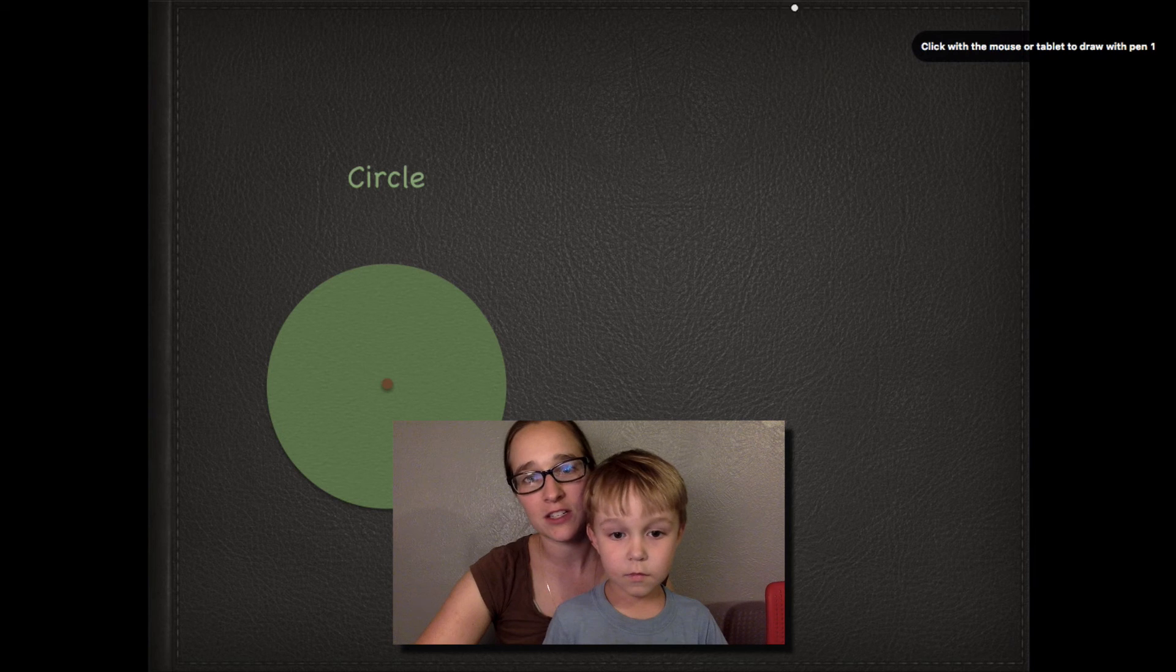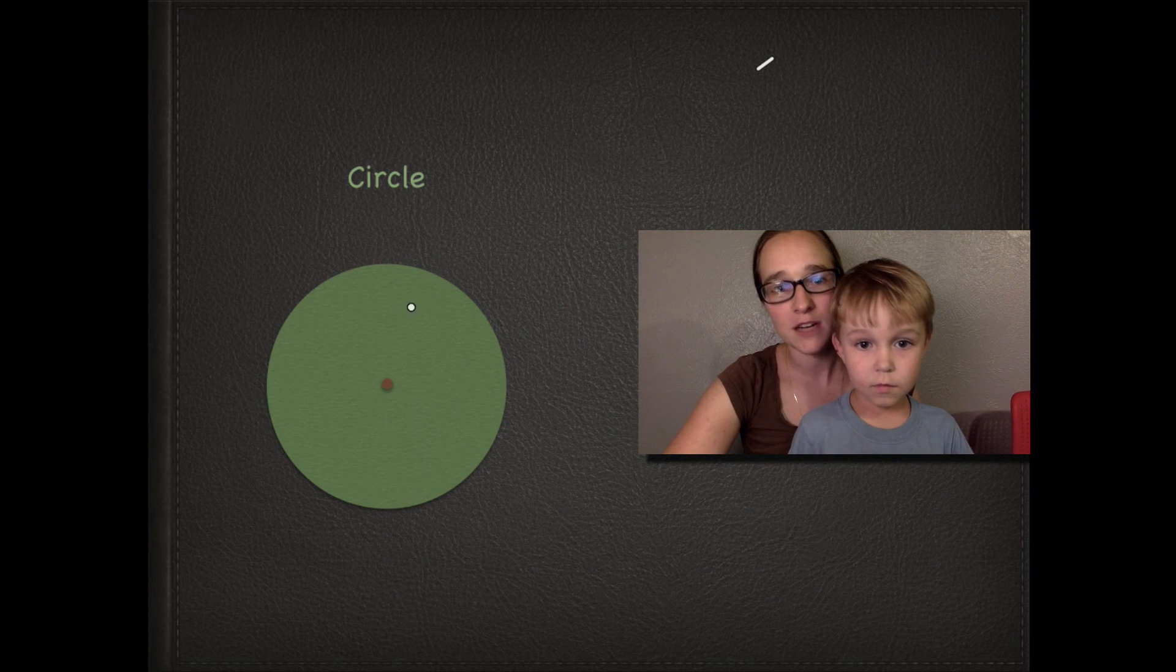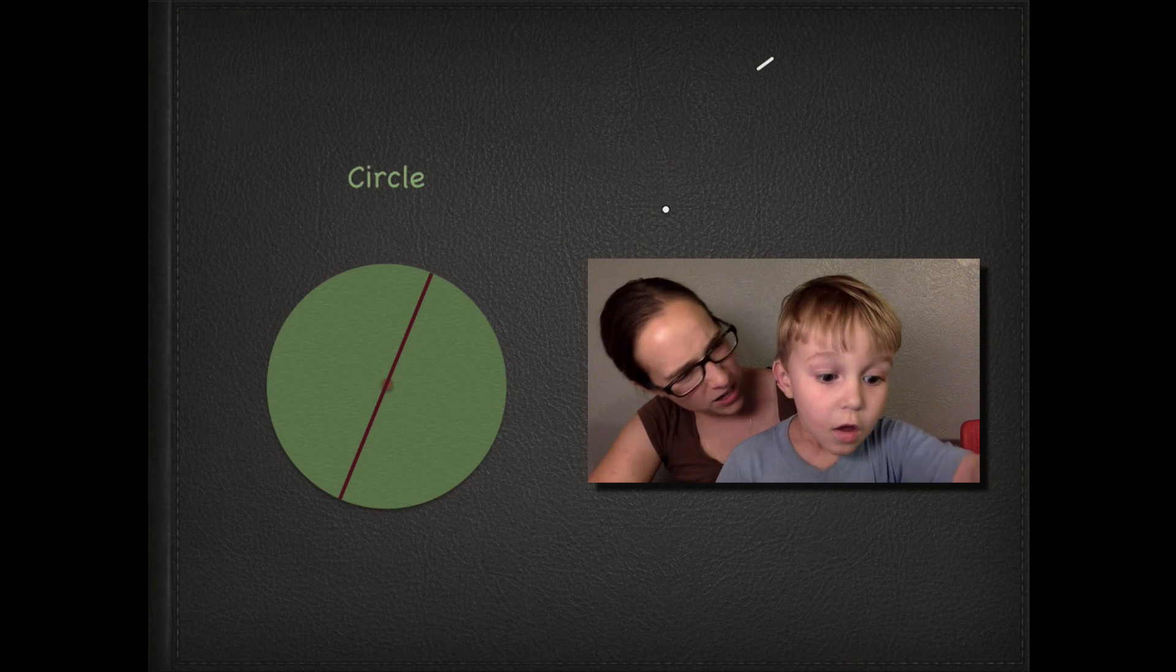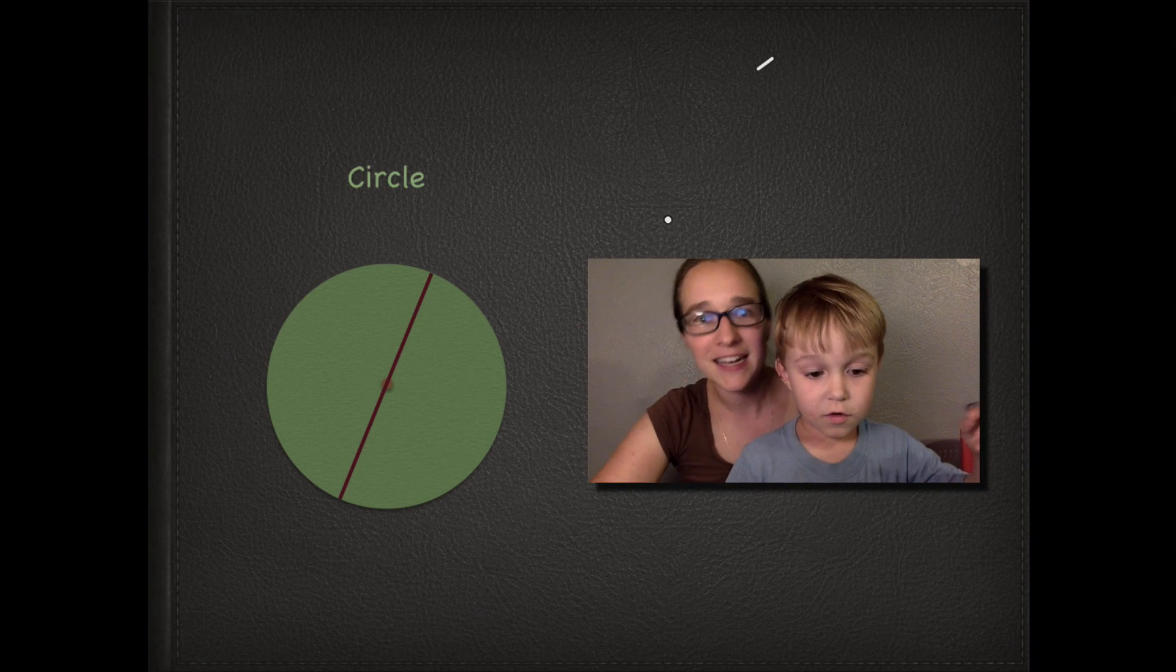So let's start by looking at a circle. As you can see here, if we put a line through our circle, that line is called a diameter. What's the line called? Diameter.